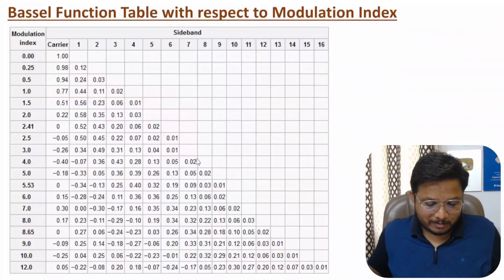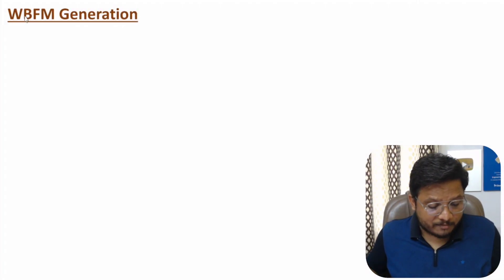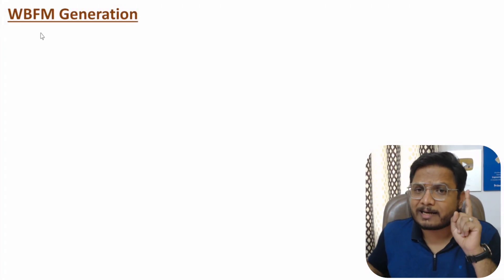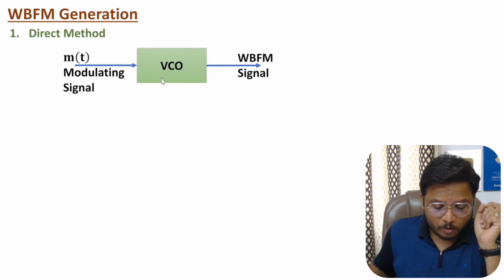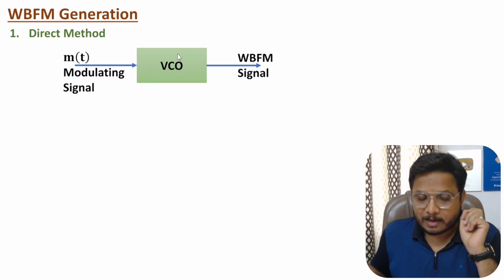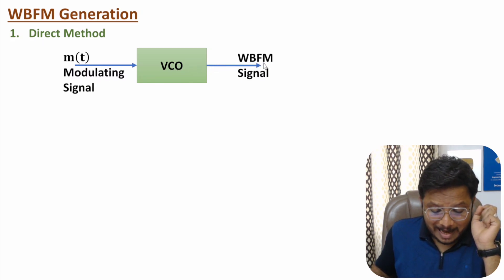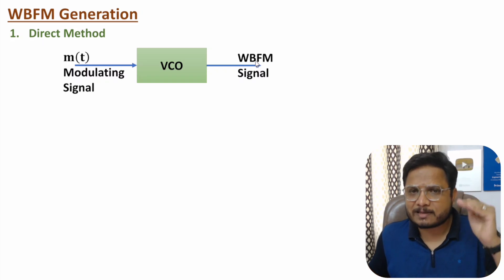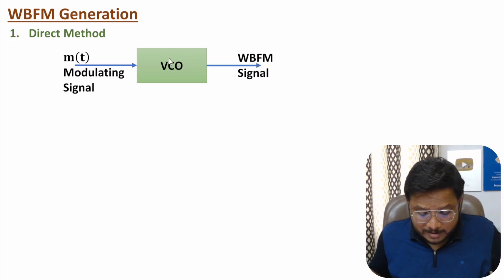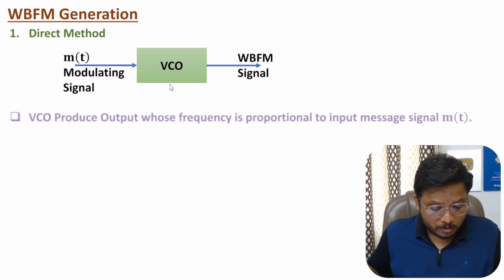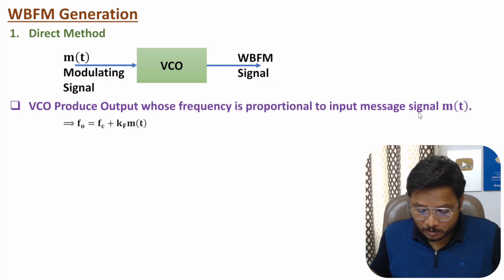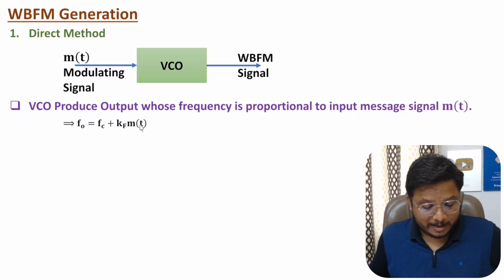Now let me discuss generation of WBFM. The first method is the direct method. In the direct method we use a VCO — Voltage Controlled Oscillator. The oscillation frequency of the VCO depends on the message signal. Output frequency is directly proportional to the message signal. As message signal amplitude changes, output frequency changes, generating a WBFM signal. The VCO produces output frequency fc + kf·m(t).